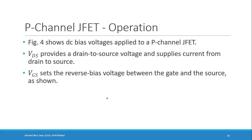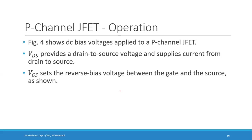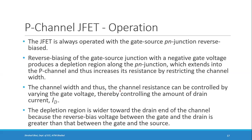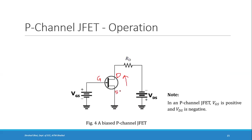VDS provides gate-to-source voltage and supplies current from drain to source; VGS sets the reverse bias voltage between gate and source. JFET is always operated with the gate-source PN junction reverse biased. Reverse biasing produces a depletion region along the PN junction extending into the P-channel, increasing resistance by restricting the channel. The channel width and resistance can be controlled by varying the gate voltage, thereby controlling the drain current. The depletion region is wider towards the drain and narrower towards the source. This concludes the construction and operation of P-channel JFET; in the next session we will cover characteristics and parameters of both N-channel and P-channel JFET.